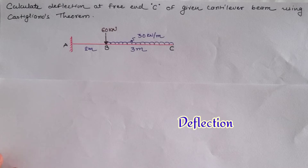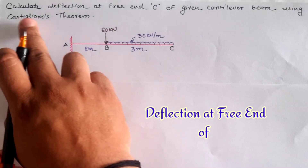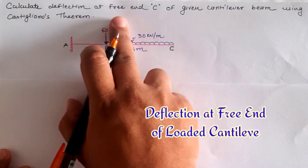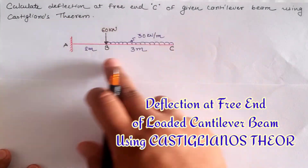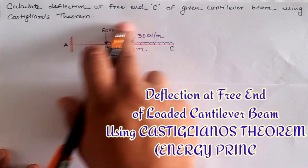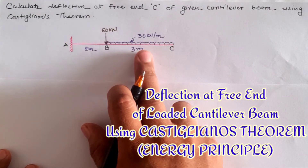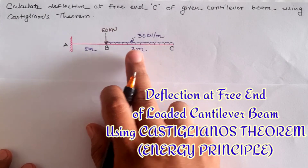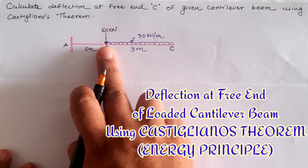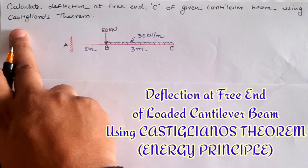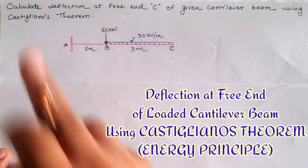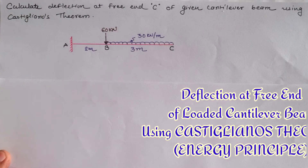Hello friends, today we are going to calculate the deflection at C of a given cantilever beam which is loaded partially with a UDL and a point load at the starting of the UDL, using Castigliano's theorem.